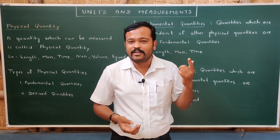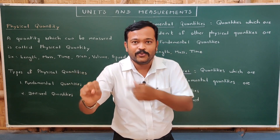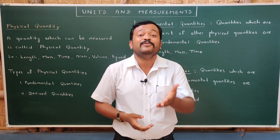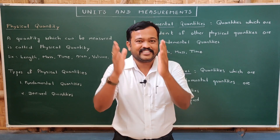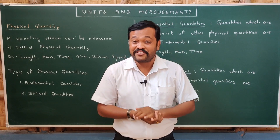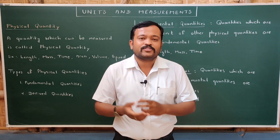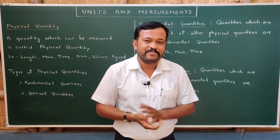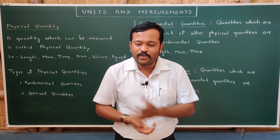Suddenly you remember only five minutes remain before college starts, so you accelerate the bike. Acceleration is a physical quantity — it depends on how much speed you change in how much time. You arrive at college, park the bike, and stand at the gate. The gatekeeper brings a sanitizer and a thermometer gun to measure your body temperature. Temperature is a physical quantity.